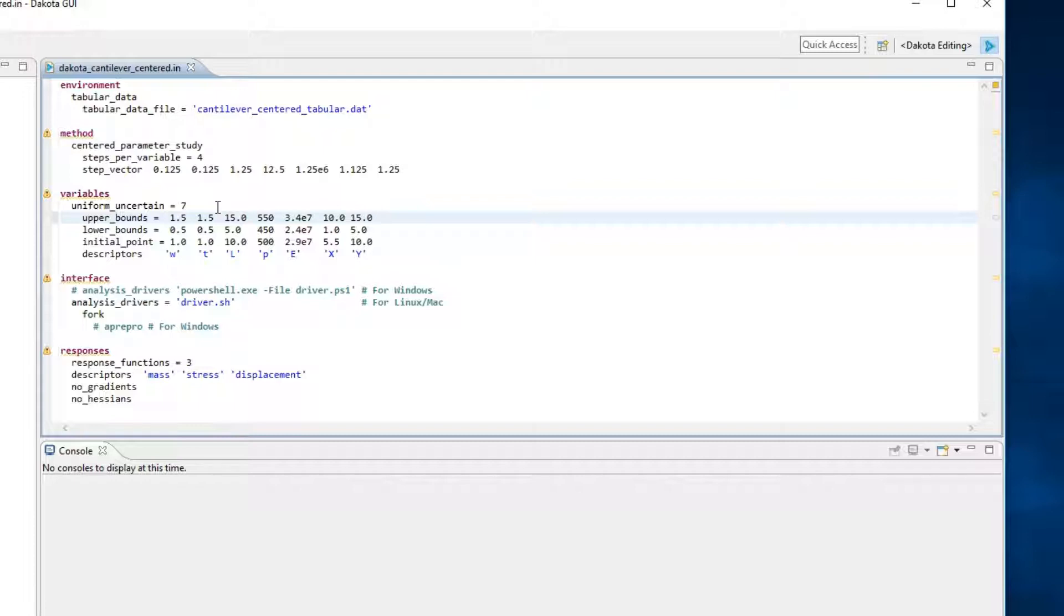We should also mention the interface block for this Dakota study. Rather than using the direct keyword to specify an internal Dakota driver, this interface uses the keyword fork to tell Dakota to call an external simulation model. If you'd like to learn more about configuring Dakota to communicate with external simulation models, that topic is covered in other tutorial videos.